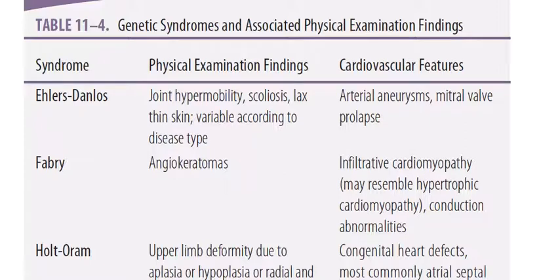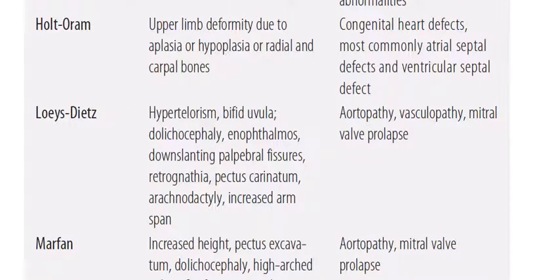Fabry disease: physical examination findings include angiokeratomas. Cardiovascular features include infiltrative cardiomyopathy — which may resemble hypertrophic cardiomyopathy — and conduction abnormalities. Holt-Oram syndrome: upper limb deformity due to aplasia or hypoplasia of the radial and carpal bones. Cardiovascular diseases include congenital heart defects, most commonly atrial septal defect and ventricular septal defect.